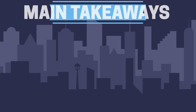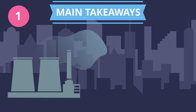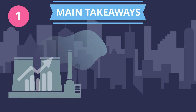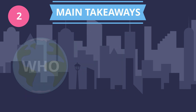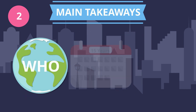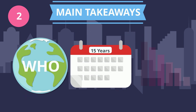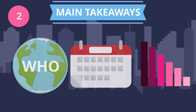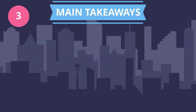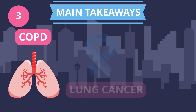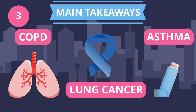Overall, the main points covered were: first, air pollution has greatly risen over the years due to human activity and has caused more health problems; second, the World Health Organization updated their guidelines 15 years later with greatly reduced limits because of this worry; and third, some examples of health issues attributed to air pollution are chronic obstructive pulmonary disease, lung cancer, and asthma.